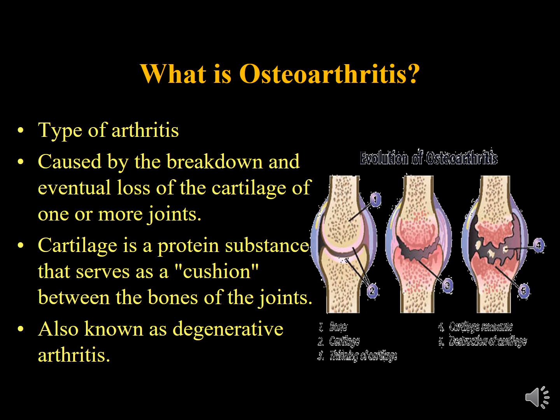Here we can see the difference between normal articular cartilage and Osteoarthritis. The normal articular cartilage is smooth. In Osteoarthritis, there are defects and many projections. Bone projections occur at the periphery of the joint. Later on, the defect deepens, reaching the underlying bone. New bone formation at the ends of the bones leads to marked Osteoarthritis after degeneration of the cartilage.